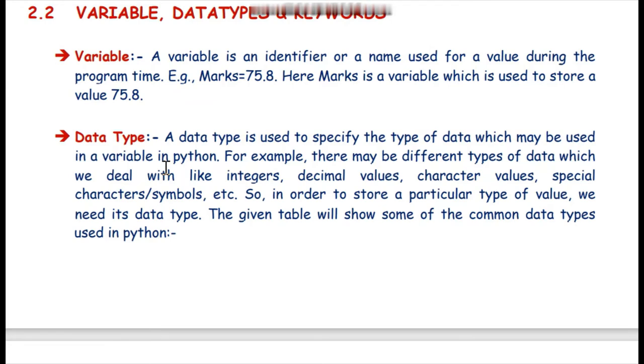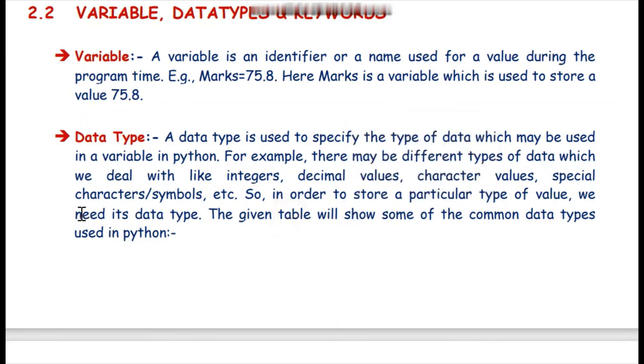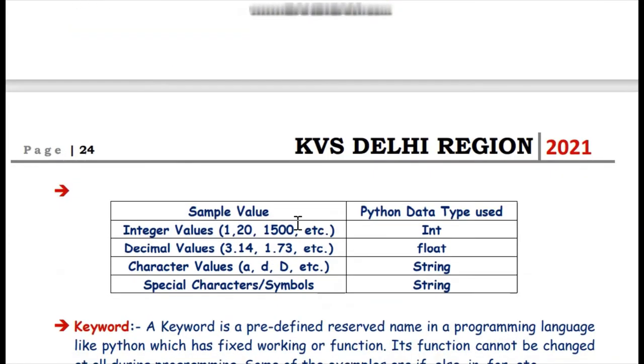If we want to store decimal values, then we will give the float data type. If we want to store the name of a person or student, we will use the string data type. If we want to enter simple numeric values, we will use integers. So in order to store a particular type of value, we need its data type. The given table will show some of the common data types used in Python.